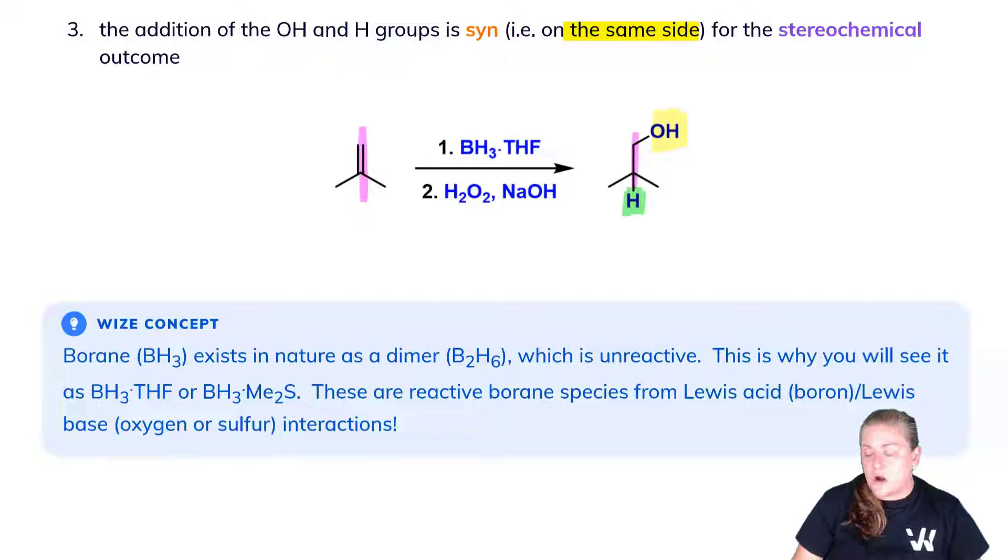When you see borane deployed in organic chemistry, you'll see it delivered as BH3·THF or Me2S. THF is tetrahydrofuran, a five-membered ring with an oxygen atom. Me2S is sulfur with two methyls and a lone pair. THF and Me2S form a Lewis acid-Lewis base complex with borane, allowing the electron-deficient boron to become reactive.